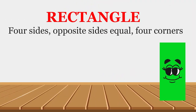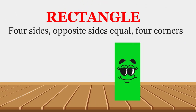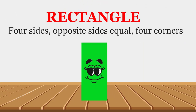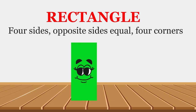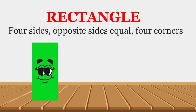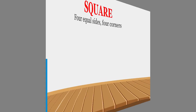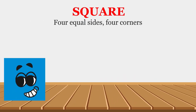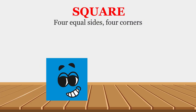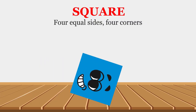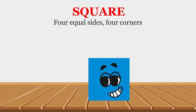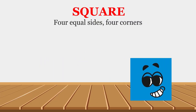Rectangle: four sides, opposite sides equal, four corners. Square: four equal sides, four corners.